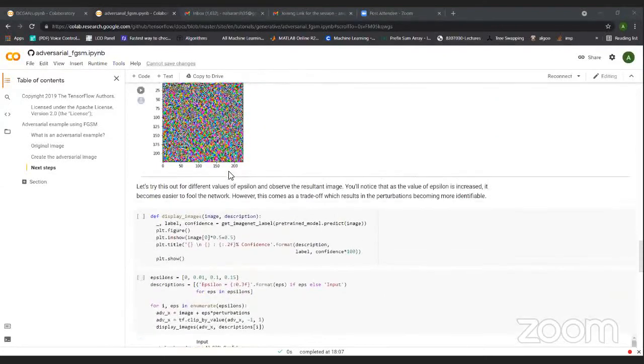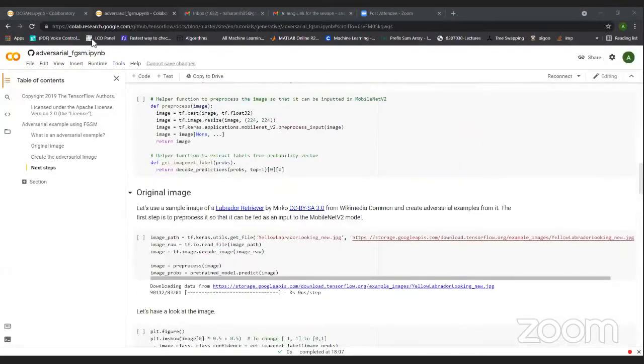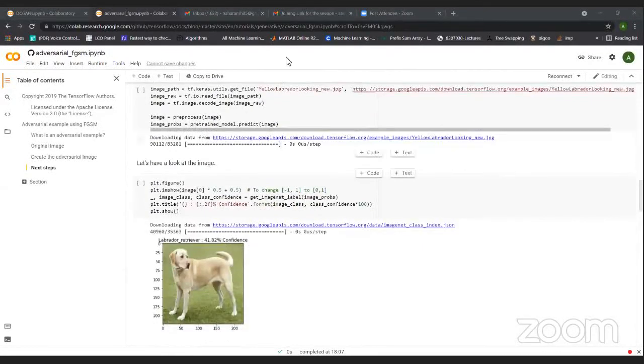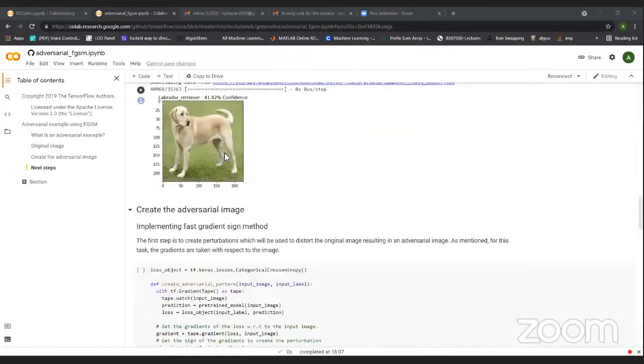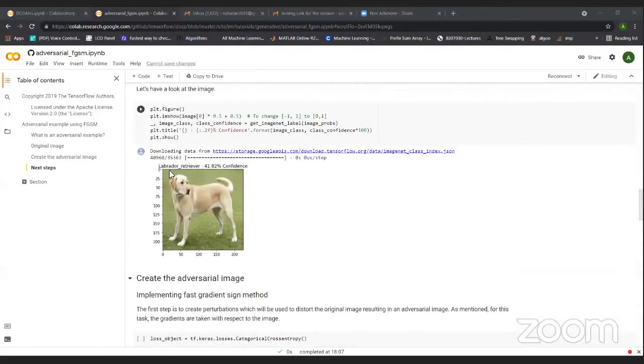So here you can see this is just the code for the adversarial FGSM. So initially this is a dog, which is classified, we are classifying the breed of the dog. So it is saying it's a Labrador.